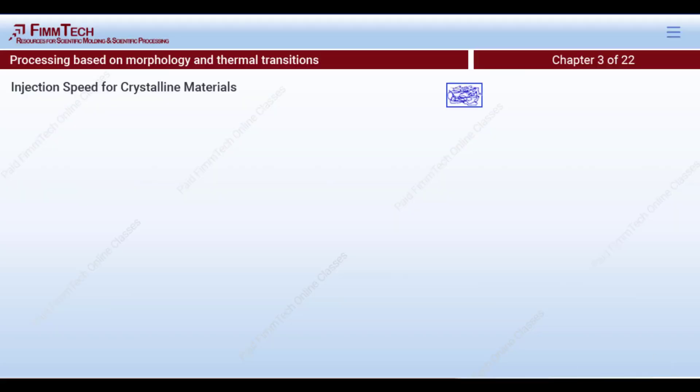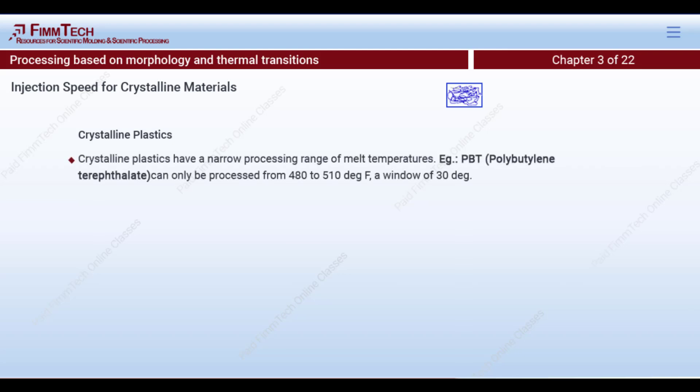We talked about morphology and thermal transitions — now let's apply this to the processing side. Crystalline materials have a narrow processing range for melt temperatures. For example, PBT (polybutylene terephthalate) can be processed from 480 to 510 degrees Fahrenheit — a small window of about 30 degrees.